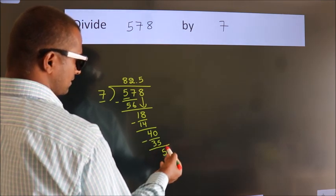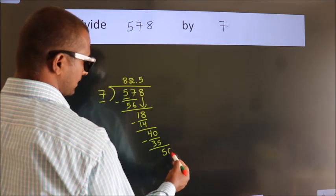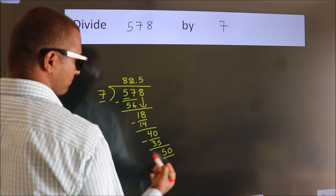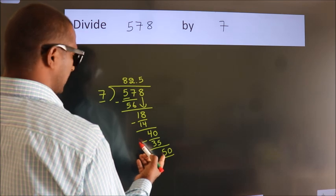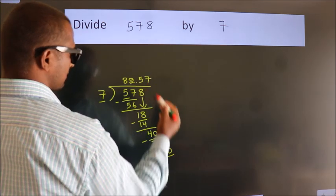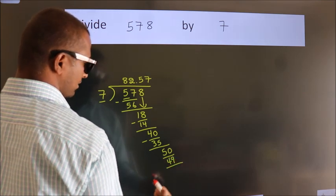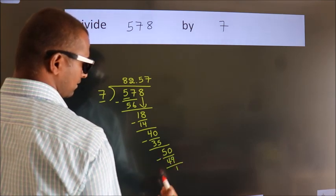After this, we already have the decimal, so directly take 0. So 50. A number close to 50 in the 7 table is 7 times 7, which is 49. Now we subtract and get 1.